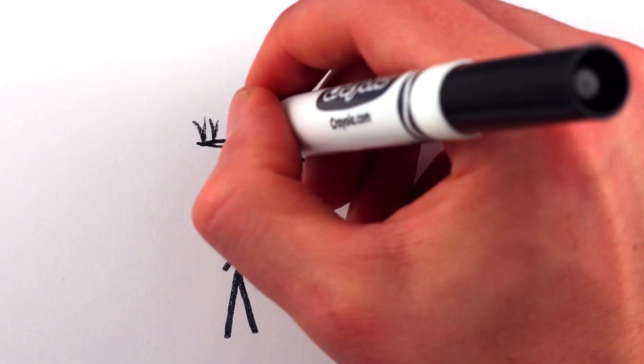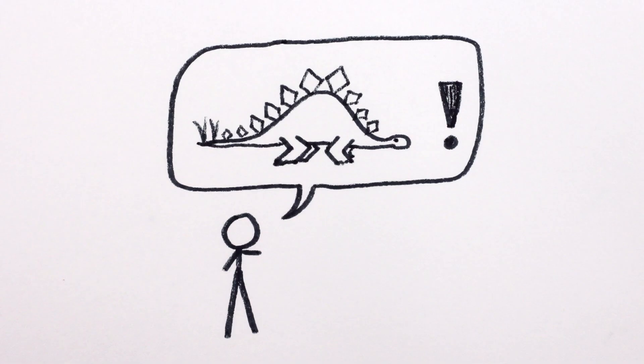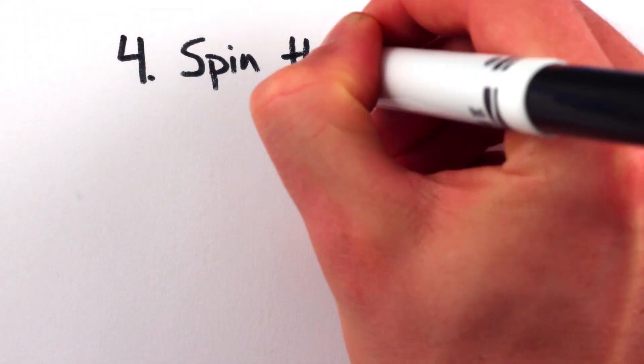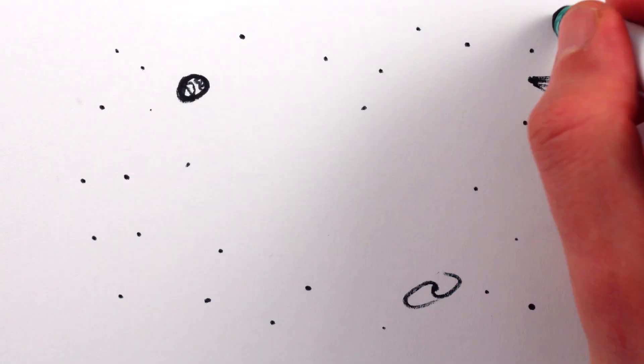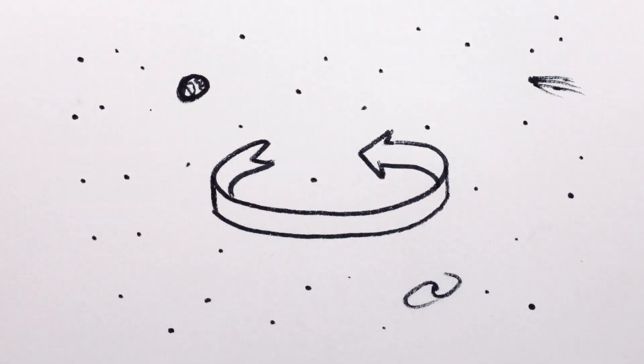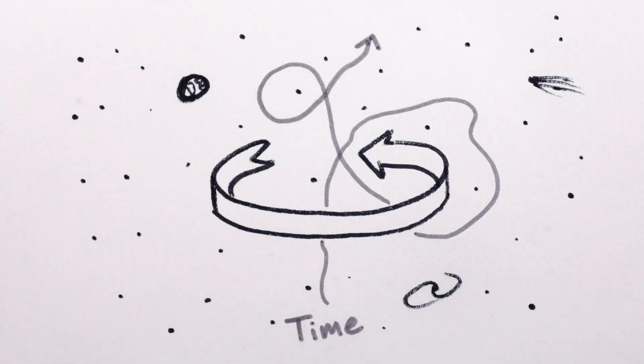But maybe you want to time travel more than a few femtoseconds. Get ready for your head to start spinning. I mean, the universe. Because if the whole universe were spinning really fast, general relativity predicts there would be time loops all over the place.